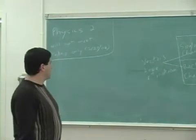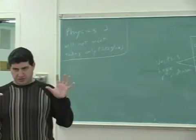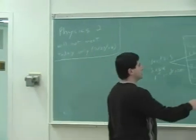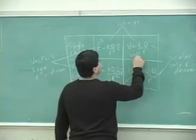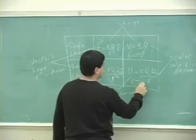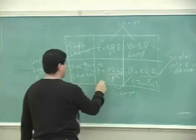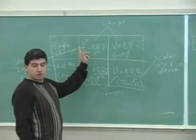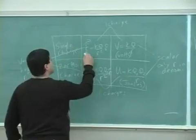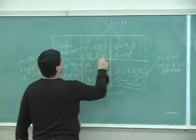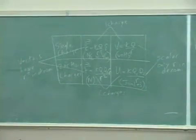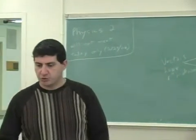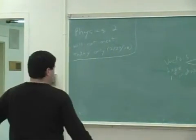Now we can see the full picture of the different quantities. As for units: V is in volts, U is in joules, F is in newtons, and E has two equivalent units — newtons per coulomb or volts per meter. This is the full summary of all these quantities. Now let's do a problem.